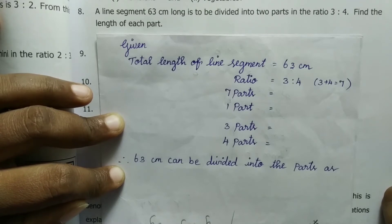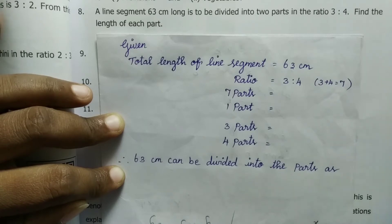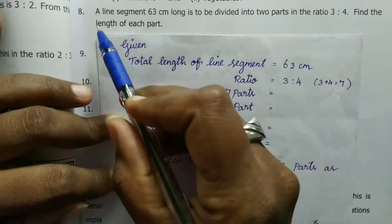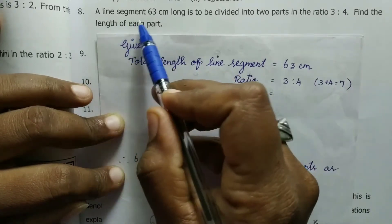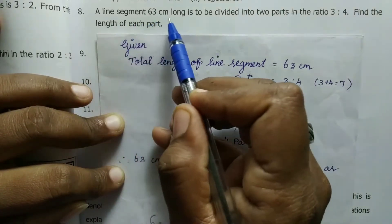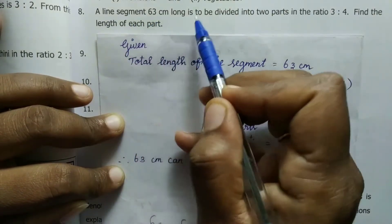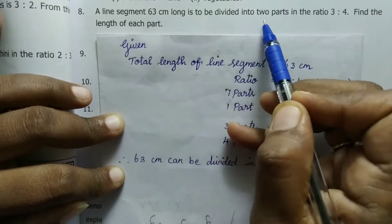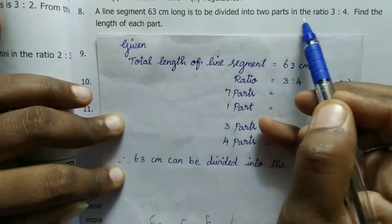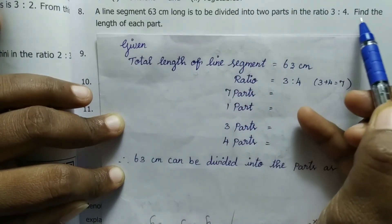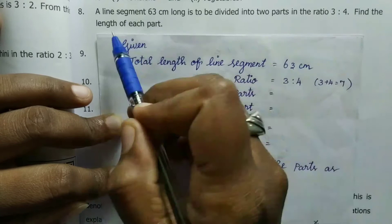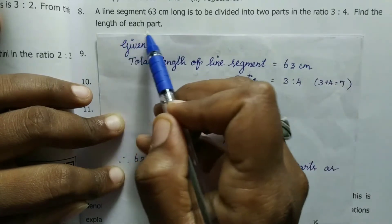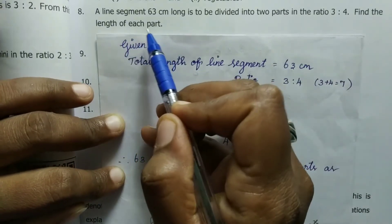Exercise 3.2, question number 8. A line segment is 63 cm long. It is to be divided into 2 parts in the ratio 3 is to 4. Find the length of each part.